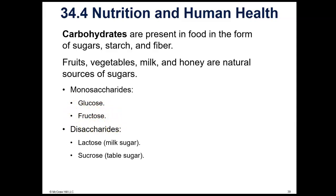We do take in fructose sometimes when we eat fruit, but we rarely take in glucose in its basic form. We take in glucose and fructose usually as components of disaccharides. Glucose we take in as a component of starch and the fiber that we get in our diet. Fruits, vegetables, milk, and honey are natural sources of sugars.